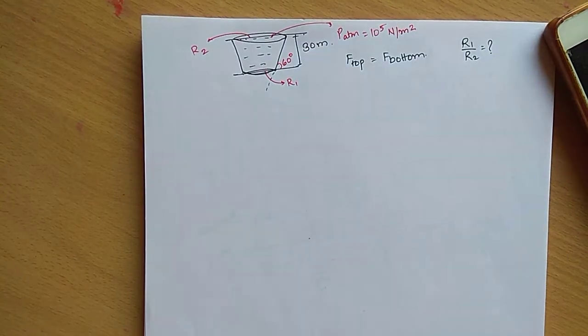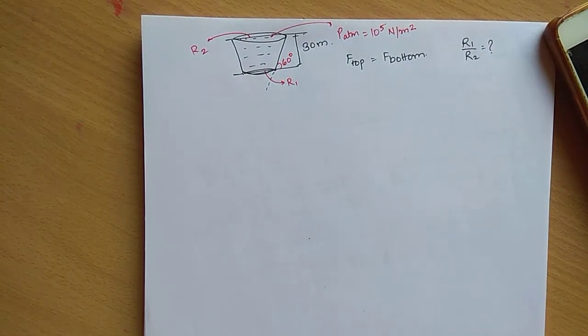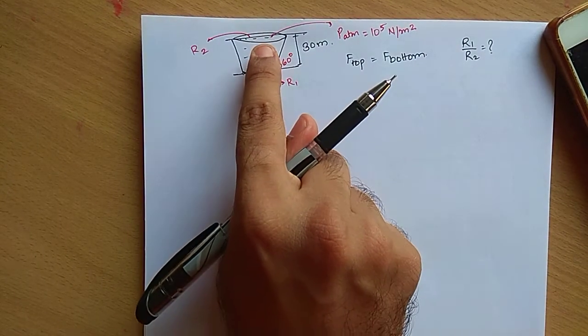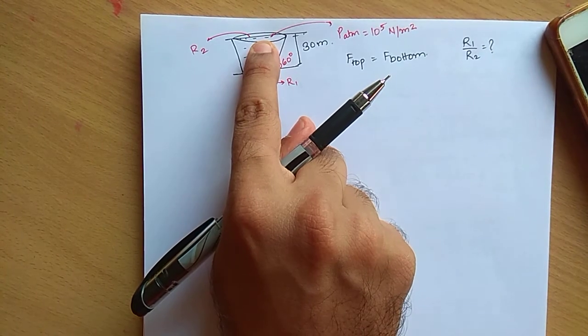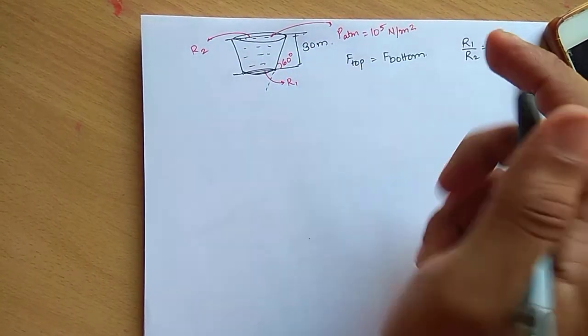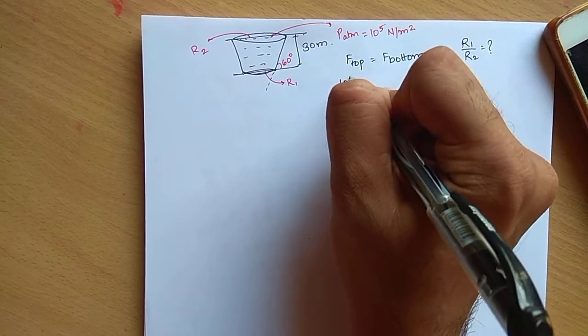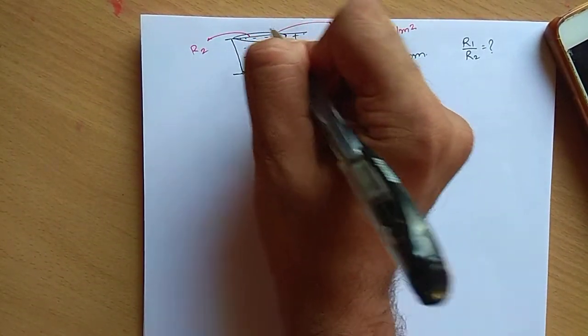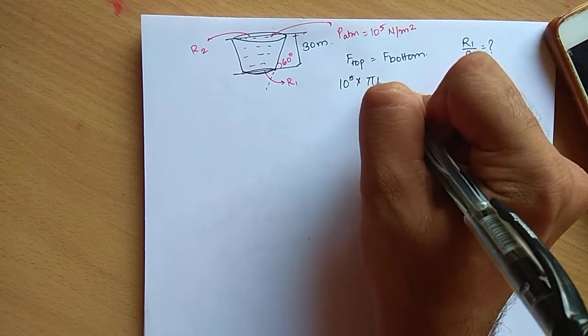Now r1 by r2 you have to find out. It is very simple. Force at the top is equal to pressure at the top - atmospheric pressure that is 10 raised to 5 - into the area, that is pi r2 square.